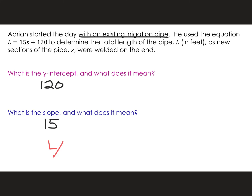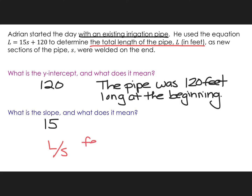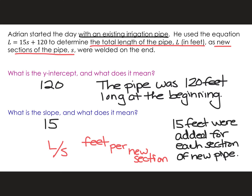Per — where my x would be, S. What does the L stand for? Determine the total length of the pipe L in feet — so it's 'feet.' I'm going to say 'feet per' — and then what does S stand for? New sections of pipe — per new section. Can you put together what the slope means? The slope of 15 means 15 feet were added for each section of new pipe.